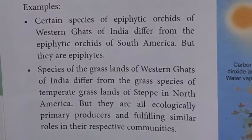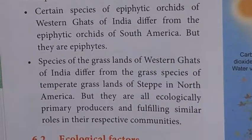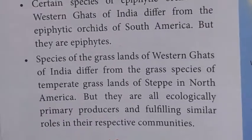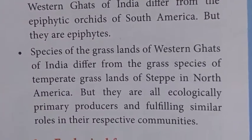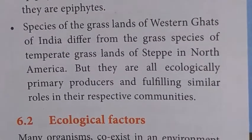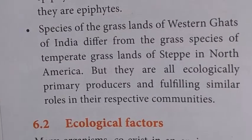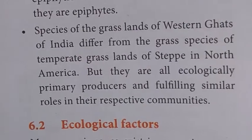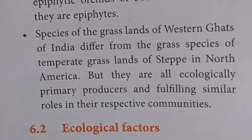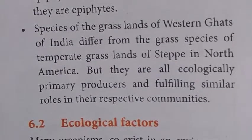Similarly, grass species of the Western Ghats of India differ from grass species of the temperate grasslands of the steppes in North America, but they are all ecological primary producers fulfilling similar roles in their respective communities — all involved in photosynthesis and preparing their own food, though existing in different ecosystems.